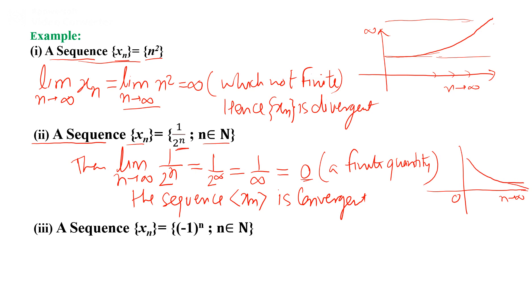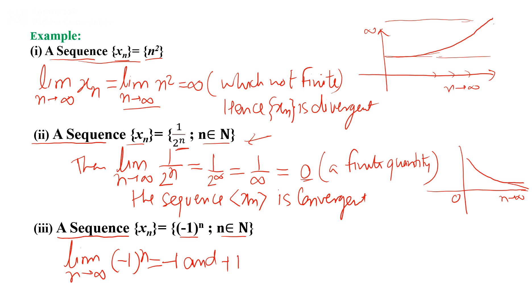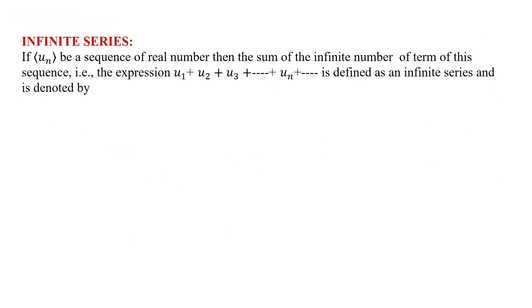Third example: xn = (−1)ⁿ where n belongs to the natural numbers. When we find the limit at infinity of (−1)ⁿ, we get either −1 or +1. If n is odd we get −1, and if n is even we get +1. Hence the given sequence is oscillatory.